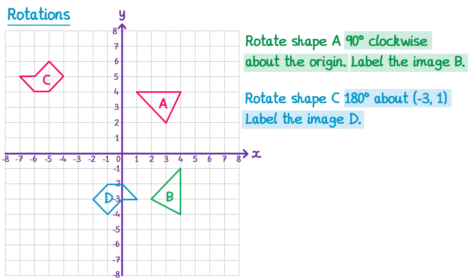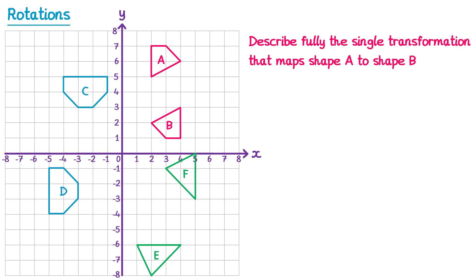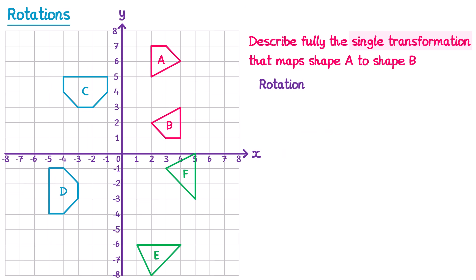Sometimes in an exam question a rotation will have already been done for you, and you need to describe it. The question will likely be worded as: describe fully the single transformation that maps shape A to shape B. There are four different transformation choices — rotation, reflection, translation, or enlargement. In this case the answer is a rotation, so we write that down, which gets you one mark for naming the correct transformation.